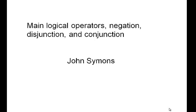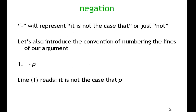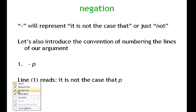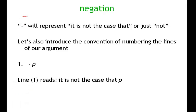This video talks about the main logical operators: negation, disjunction, and conjunction. We're going to introduce some of the straightforward, rudimentary features of sentential logic and make some comments about the prominent operators. To begin with, let's talk about negation. Negation is represented in the text by a little symbol, and it represents 'it's not the case that' or just plain 'not.' We call this negation.